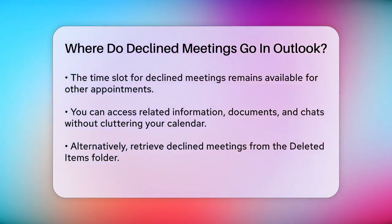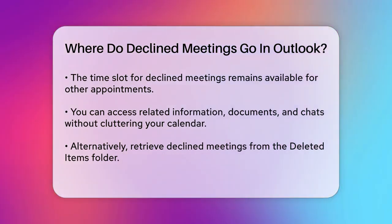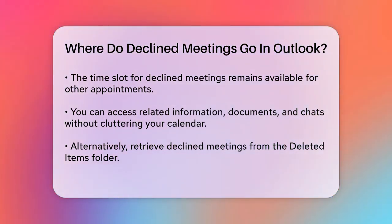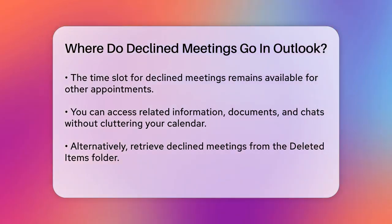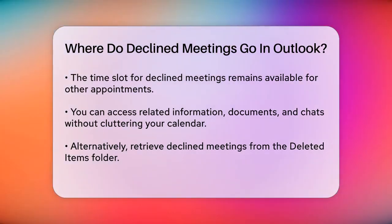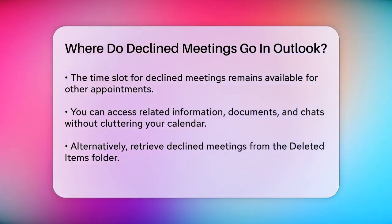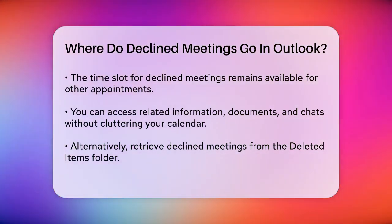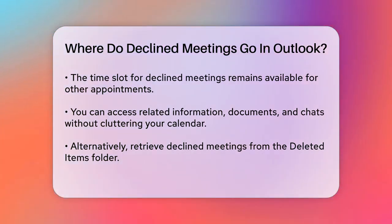If you prefer a more manual approach, you can also retrieve declined meetings from the Deleted Items folder. Go to your Deleted Items folder, find the declined meeting and open it, then click Accept but choose Do Not Send a Response. This method puts the declined meeting back on your calendar without changing your response status.